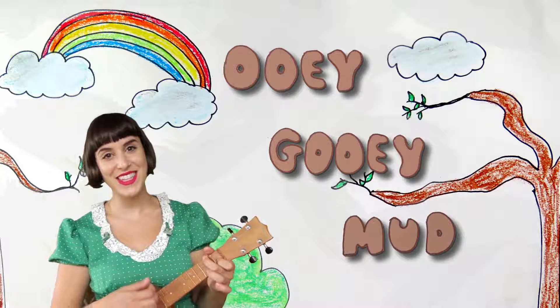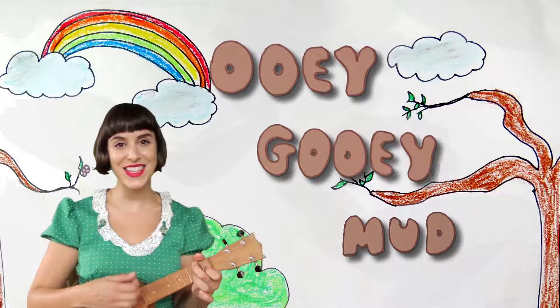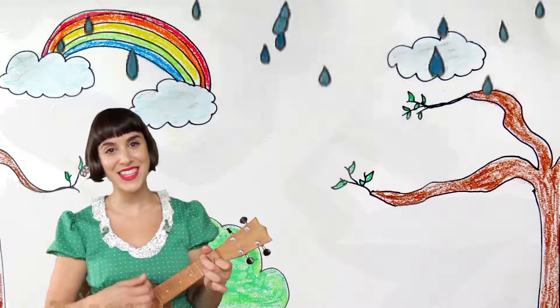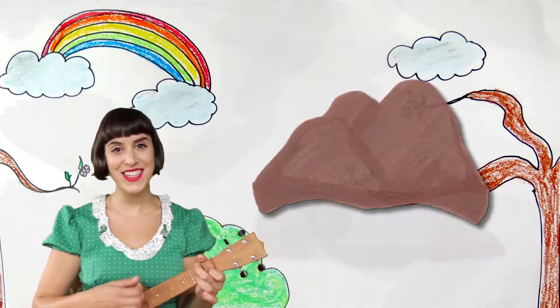Ooey gooey mud. Ooey gooey mud. Ooey gooey mud. Even though it's gray out, it's not hot mud because the rain turned the dirt into ooey gooey mud.